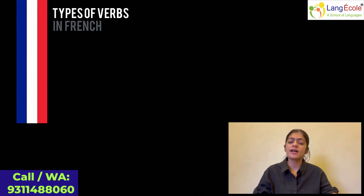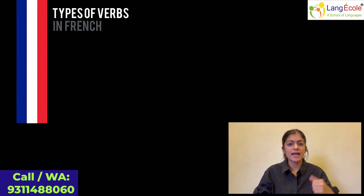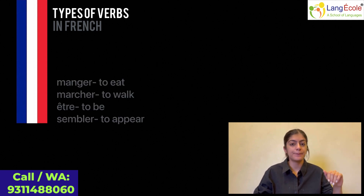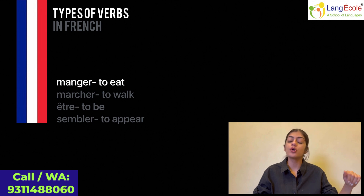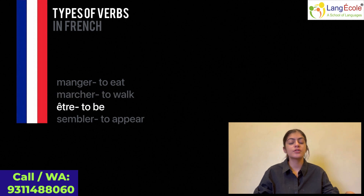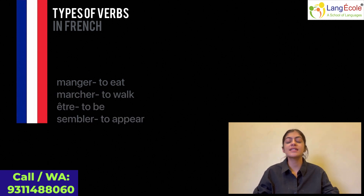To start from the very basics, what exactly is a verb? A verb indicates an action. For example, manger – to eat, marcher – to walk, être – to be, sembler – to appear. This list of verbs is endless.